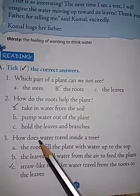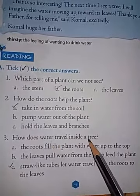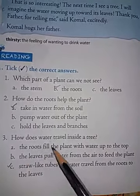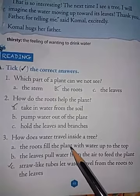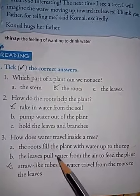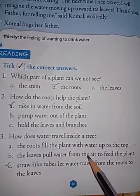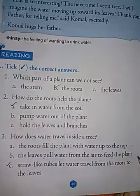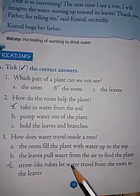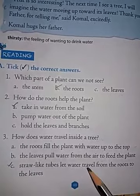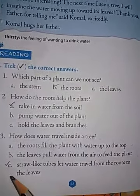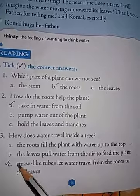Third: how does water travel inside a tree? The roots fill the plant with water up to the top, the leaves pull water from the air, or straw-like tubes let water travel from the roots to the leaves? Option C is correct.